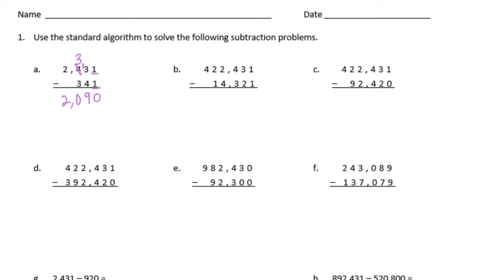B: 422,431 minus 14,321. 1 minus 1 is 0, 3 minus 2 is 1, 4 minus 3 is 1, 2 minus 4 we can't do. So we're going to borrow from the 2 and make this a 1, and this becomes a 12. 12 minus 4 is 8, 1 minus 1 is 0, and 4 minus nothing is 4. So we get 408,110.